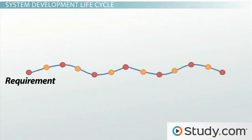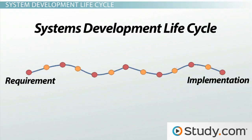A system development project includes all the activities from the time a potential requirement has been identified until the system has been fully implemented. The systems development lifecycle, or SDLC, is the process of creating systems and the models used to develop these systems.